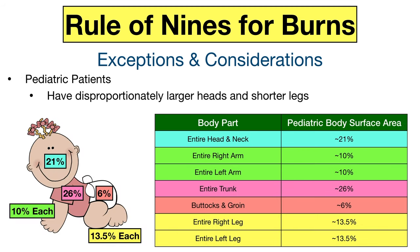The other patient population in which the rule of nines is inaccurate is pediatrics. Pediatric patients have disproportionately larger heads and shorter legs. For infants and young children, the head is disproportionately larger at 21% instead of 9%. Each arm is about 10%, the entire trunk is about 26%, the buttocks and groin area are about 6%, and each leg is about 13.5%. Note that these numbers will change in older pediatric patients.